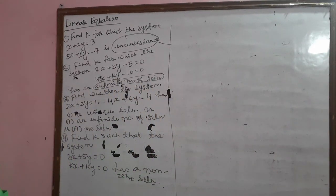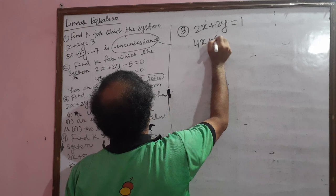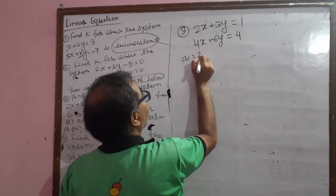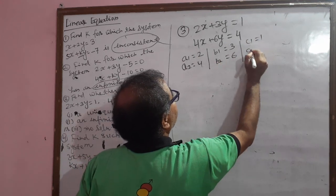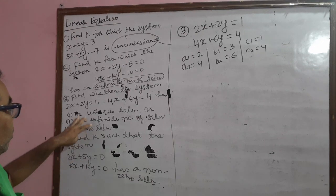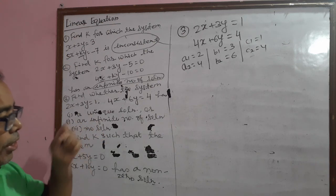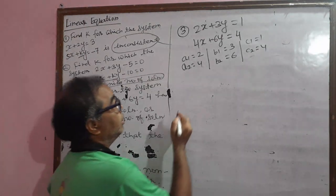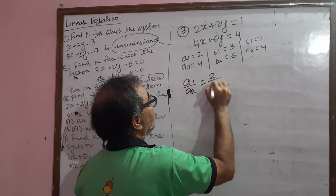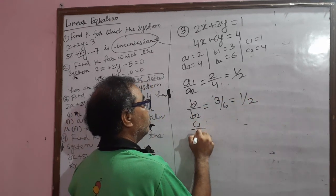Coming to the next question: find whether the system of linear equations 2x plus 3y equal to 1 and 4x plus 6y equal to 4 has a unique, infinite, or no solution. Here a1 equal to 2, a2 equal to 4, b1 equal to 3, b2 equal to 6, c1 equal to 1, and c2 equal to 4. We find the ratios: a1 by a2 equal to 2 by 4 equal to 1 by 2; b1 by b2 equal to 3 by 6 equal to 1 by 2; c1 by c2 equal to 1 by 4.